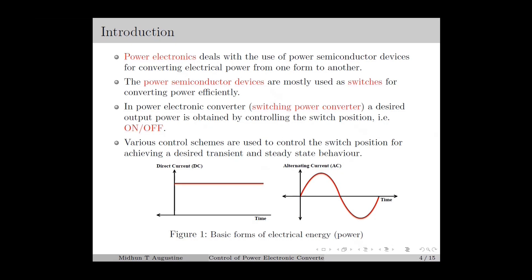The electrical energy is transferred as a combination of electric current and electric potential, which we also call voltage. The electric power, or the rate of transfer of electric energy, equals the product of current and voltage. In power electronics, we control either the current or voltage or both for converting the power.